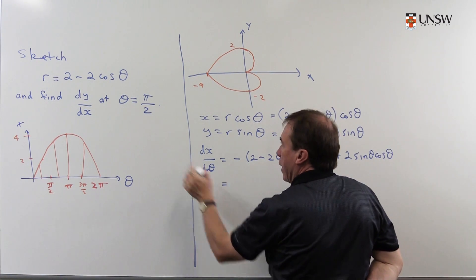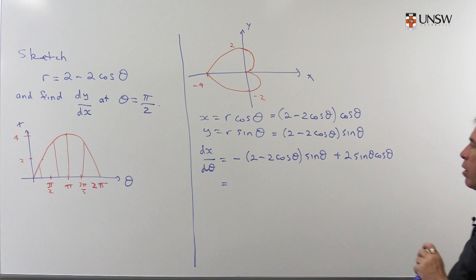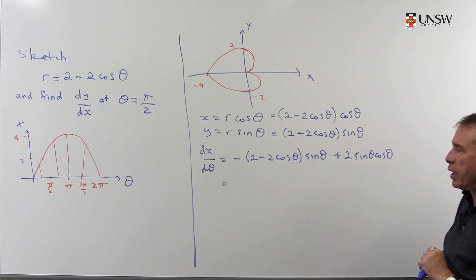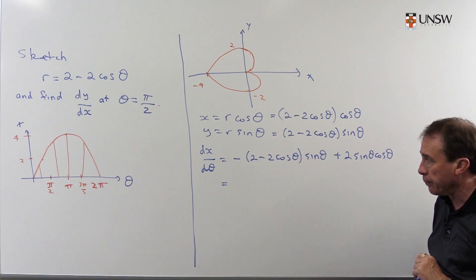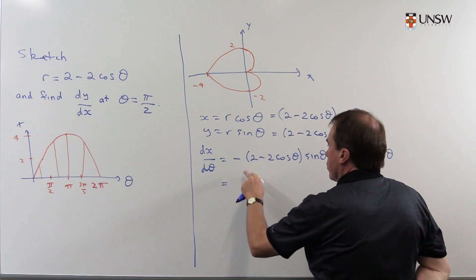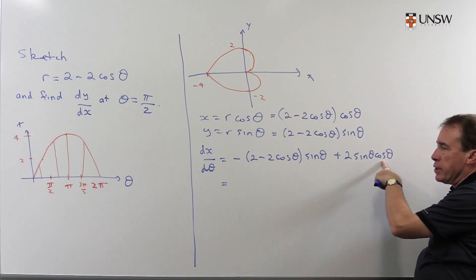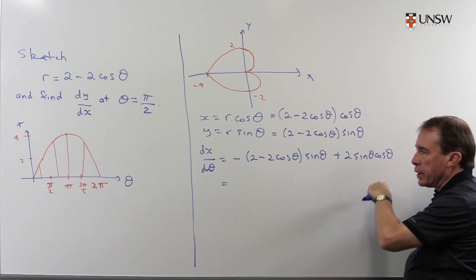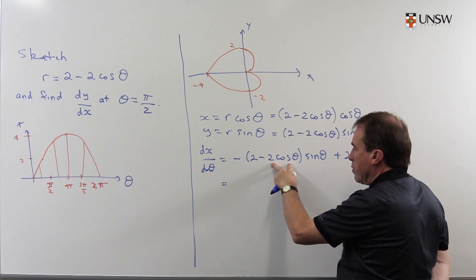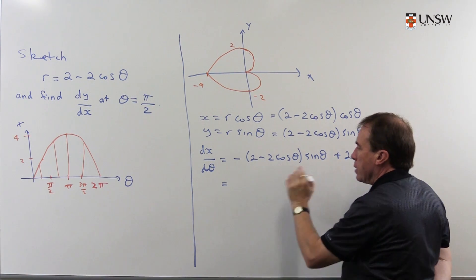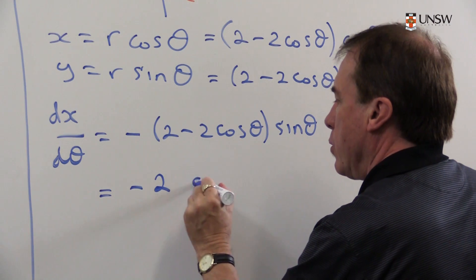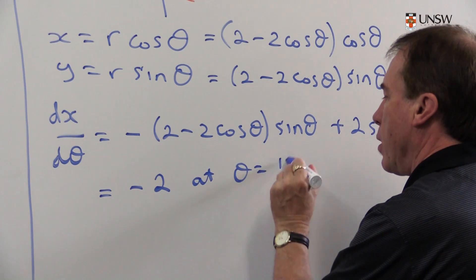I'm going to calculate that at, because I'm interested in what's happening at π/2, I might calculate that at π/2. At π/2 then, cos of 90 is 0, so that term goes completely. That's 0. Sine of 90 is 1, so I'm just going to get -2 at θ = π/2.